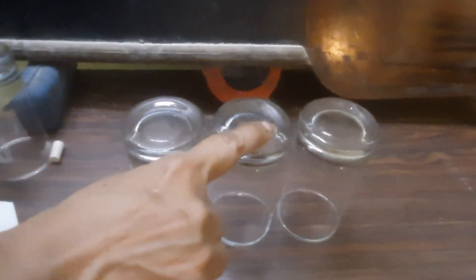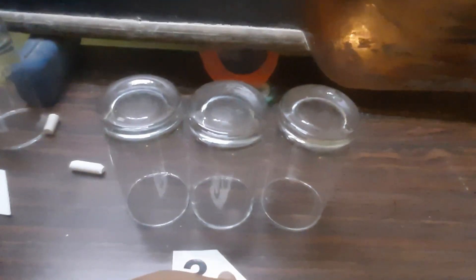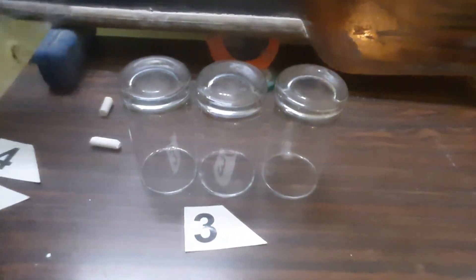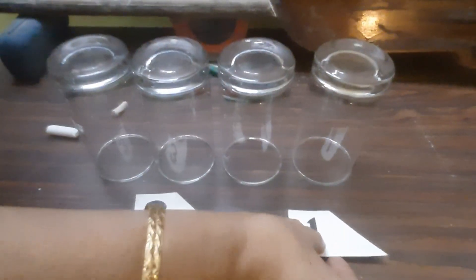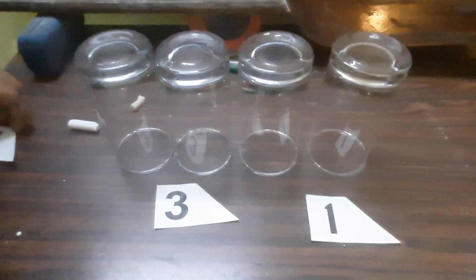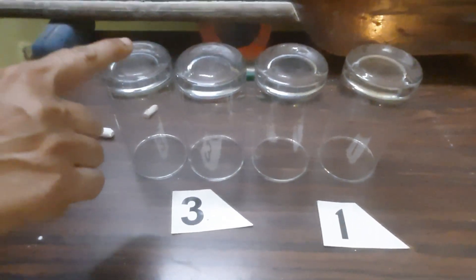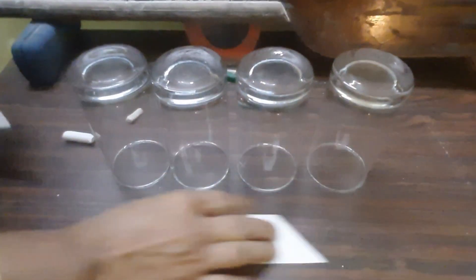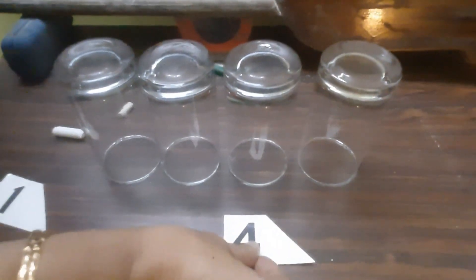See, here is 1, 2, 3. Three glasses are here. Now I add one more glass. Then how many glasses are here? Count: 1, 2, 3, 4. Four glasses are here.